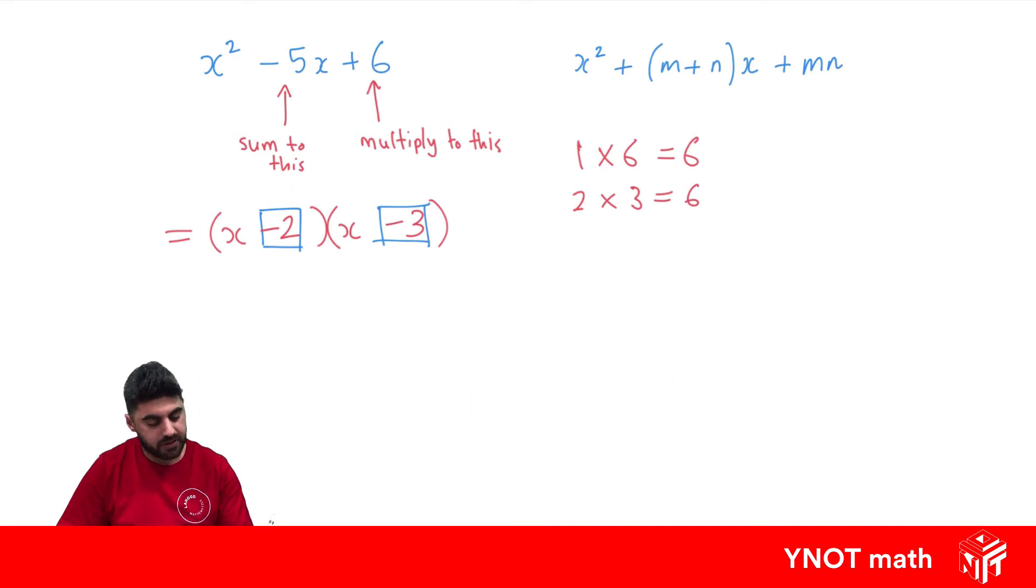Let's expand and double check. Expanding this back out: x × x = x², x × -3 = -3x, -2 × x = -2x, and -2 × -3 = positive 6.